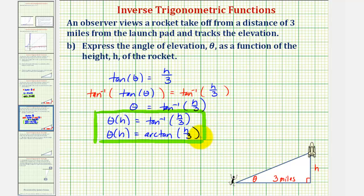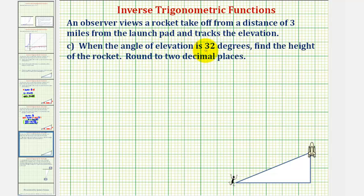Now let's take a look at part C. When the angle of elevation is thirty-two degrees, we want to find the height of the rocket. Because we're looking for the height, we'll use the first function we found that said H(θ) equals three tangent theta. In this case, we have H(32°) which equals three times tangent thirty-two degrees. This is not a nice reference angle, so we'll have to use the calculator for a decimal approximation for the height.